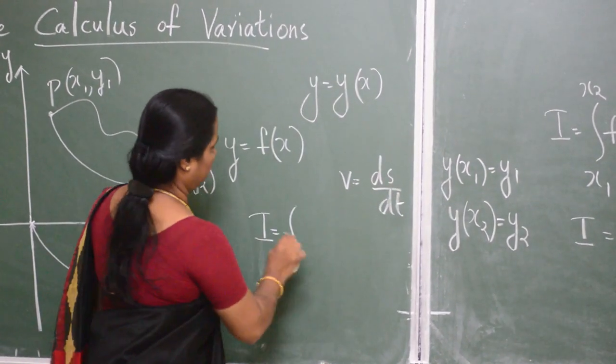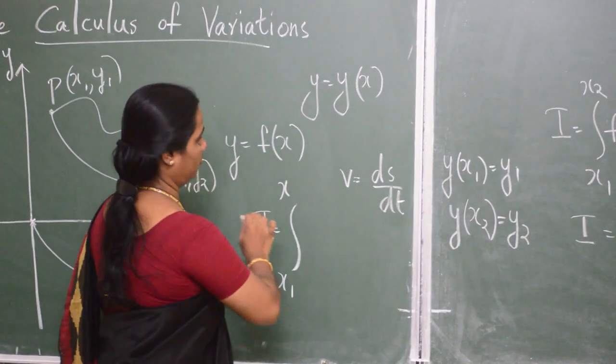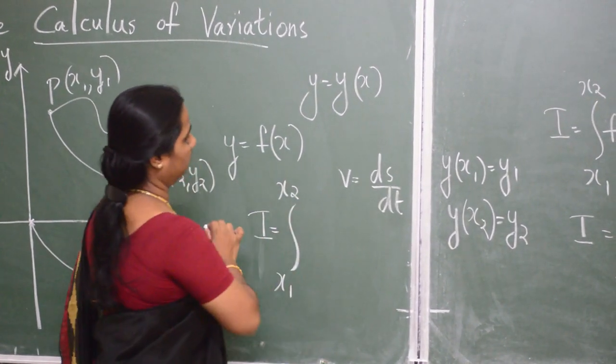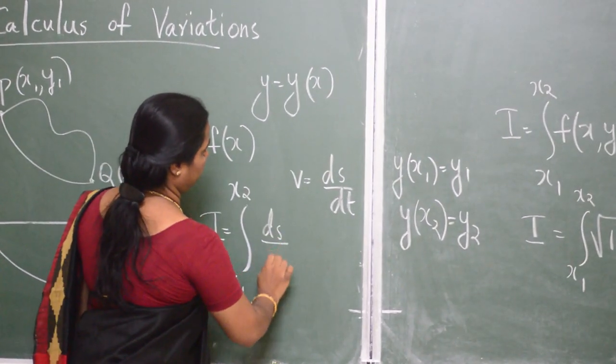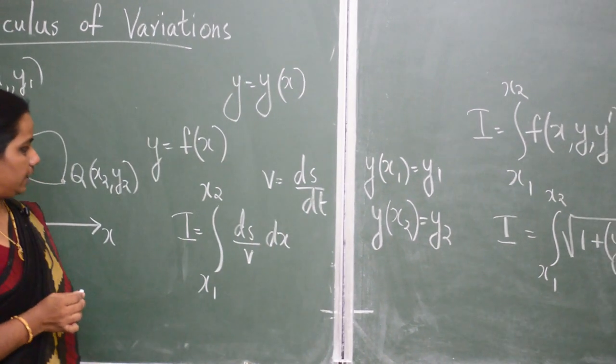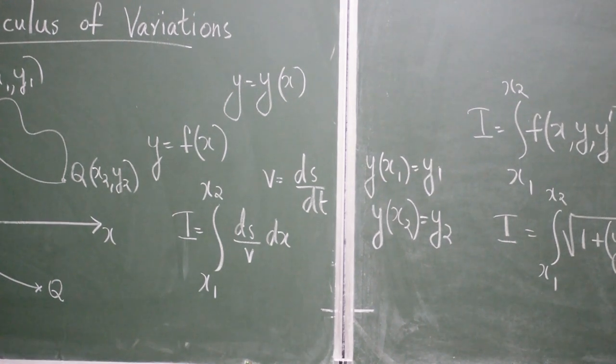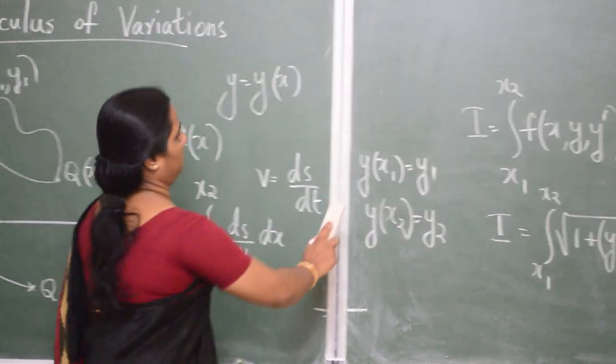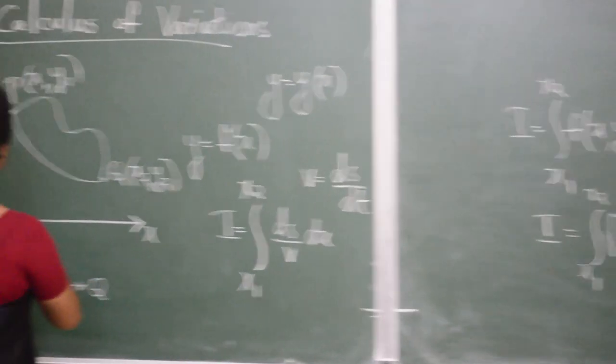The integral to be minimized is integral x1 to x2 ds by v dx. To obtain v, we know that since the bead starts from rest at the point P,